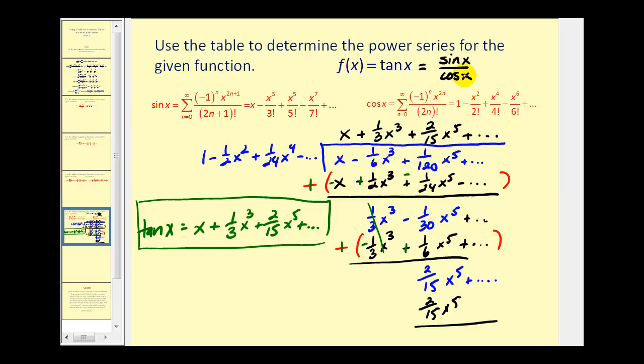One last thing to mention here. We did show on the last video that the interval of convergence for the power series for cosine x is from negative infinity to positive infinity. And it's also true for f of x equals sine x. However that's not true for tangent x. Remember tangent x has vertical asymptotes at negative pi over two and pi over two. So the interval of convergence for this power series would be the open interval from negative pi over two to pi over two.